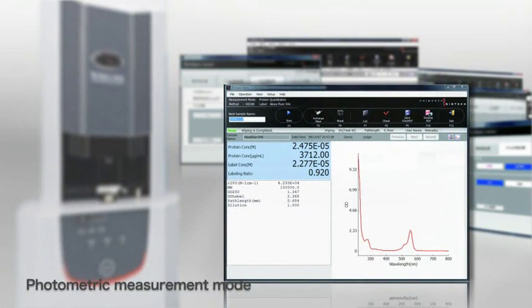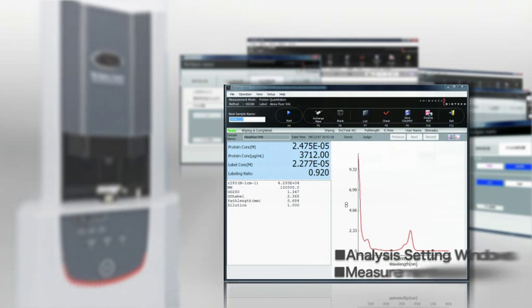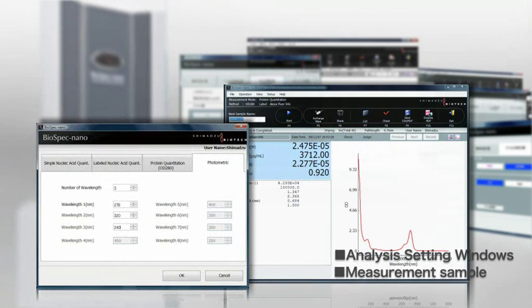This feature allows displaying and printing the optical density values along with wavelengths and optical path lengths for up to 8 specified wavelengths.